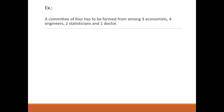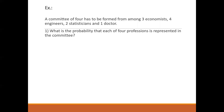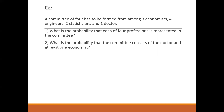From total — that is 3 plus 4 plus 2 plus 1, that is 10 — from 10 members we are supposed to form a committee of 4. Now what are the two questions given to us? First of all, what is the probability that each of the 4 professions is represented in the committee? That means I need one economist, one engineer, one statistician, and one doctor — from each profession there will be one member in the committee. The second question is: what is the probability that the committee consists of the doctor and at least one economist?